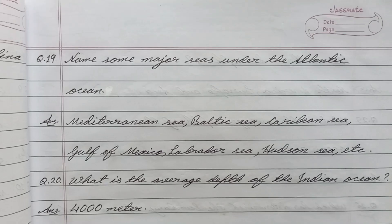Question number nineteen: Name some major seas under the Atlantic Ocean. Answer: Mediterranean Sea, Baltic Sea, Caribbean Sea, Gulf of Mexico, Labrador Sea, Hudson Sea, etc.